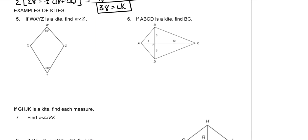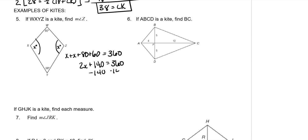Now we have kite problems. If WXYZ is a kite, find the measure of angle Z. All angles of a quadrilateral add up to 360. Since the two side angles are congruent, we have 2X plus 80 plus 60 equals 360, so 2X plus 140 equals 360. Subtract 140: 2X equals 220. Divide by 2: the measure of angle Z is 110 degrees.